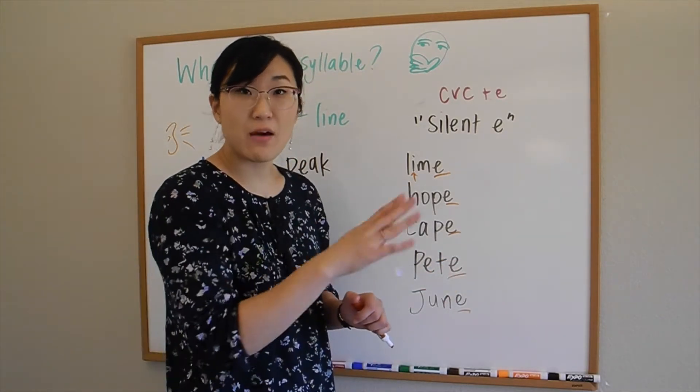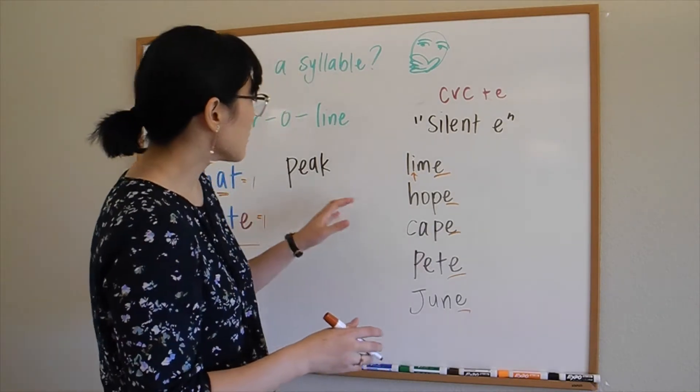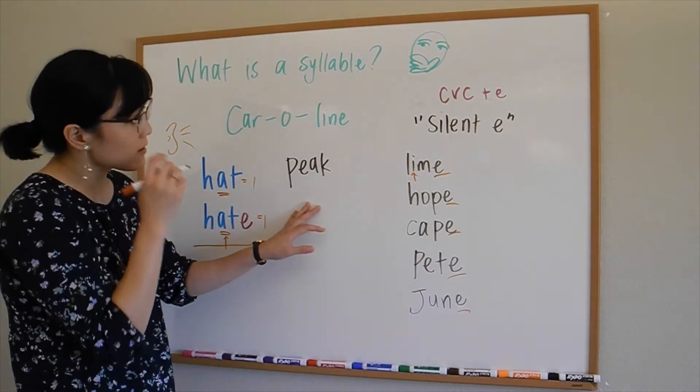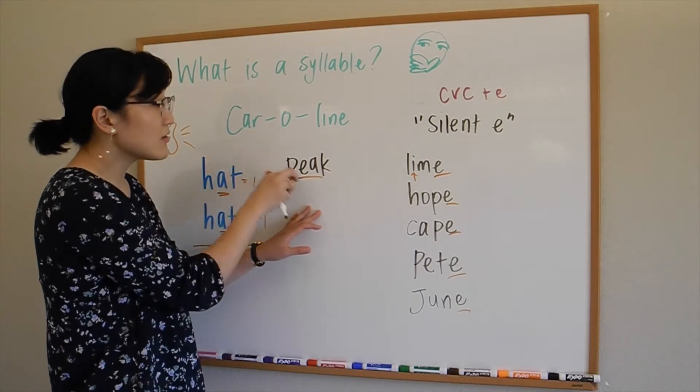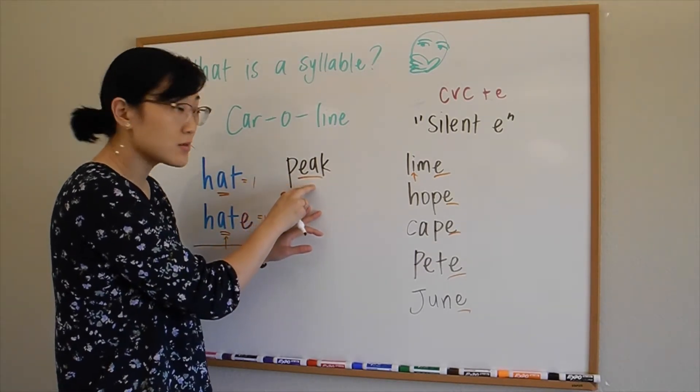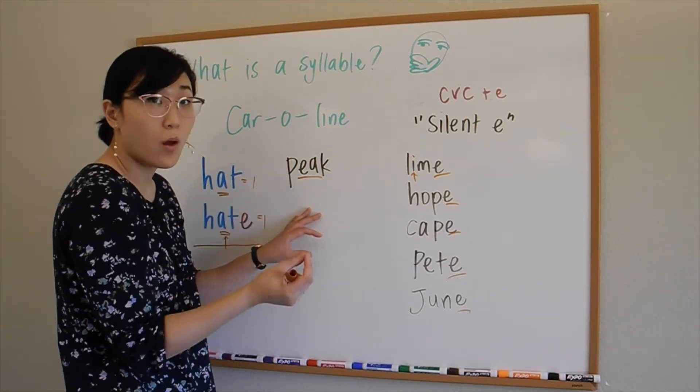But if I get rid of this 'e', my old vowel sound will now be shortened. So it goes from 'hope'—'o'—to an 'ah' sound: hop. Or in this case, 'cape'—'a'—to 'cap'. Or 'Pete'—'e'—to 'pet'. There are more vowels I'd like to share with you, but we'll save that for another video.